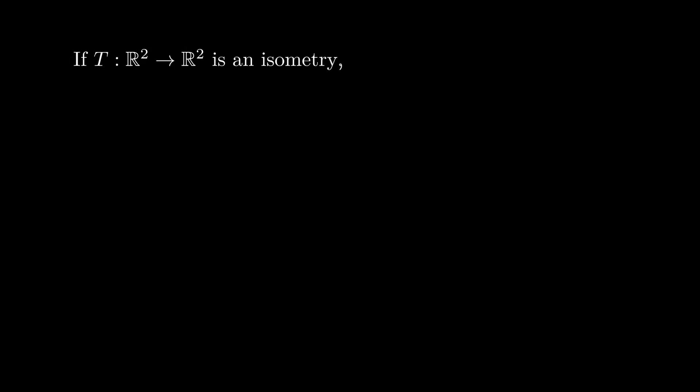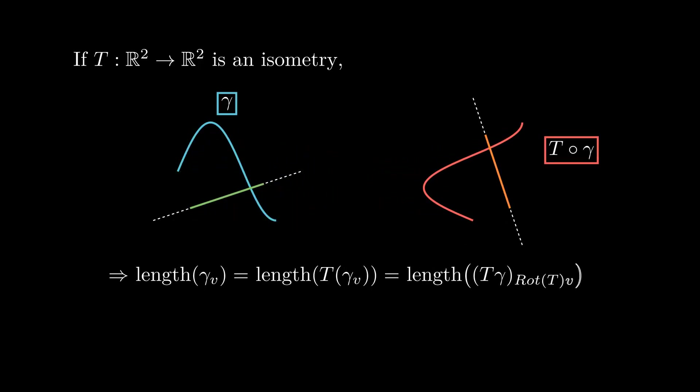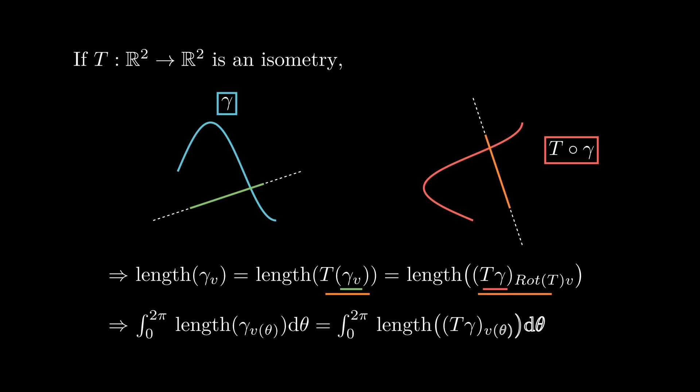The next property is about isometries. We begin with a curve gamma and a direction in which we project gamma. Applying an isometry T to this configuration, we obtain a curve T_gamma and its projection onto a distinct direction. This new direction is precisely the one obtained by applying the rotational part of T to the previous direction. Then the length of the old projection will coincide with the length of the new projection. Integrating over all directions, we get that the value of lambda does not change after applying an isometry to the curve gamma.